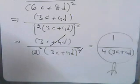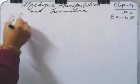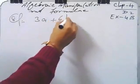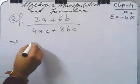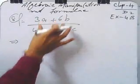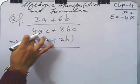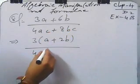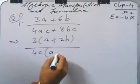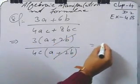Question number 8: (3a + 6b) divided by (4c + 8bc). From the numerator take common 3, giving 3(a + 2b). From the denominator take common 4c, giving 4c(1 + 2b). The (a + 2b) and (1 + 2b) factors are similar and cancel, so the result is 3 divided by 4c.